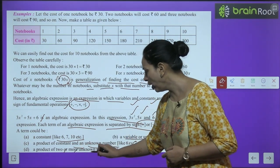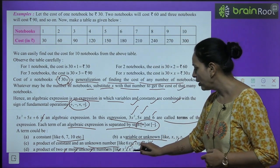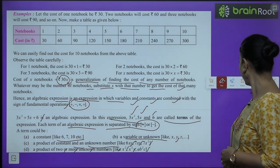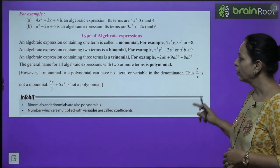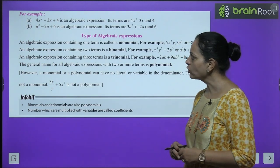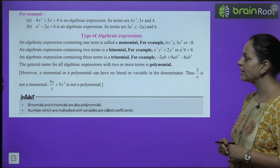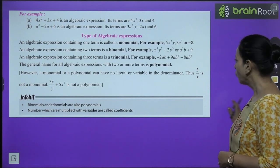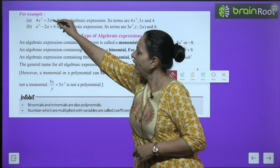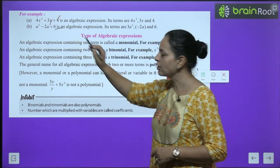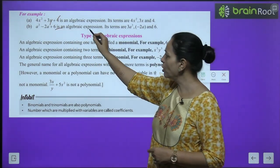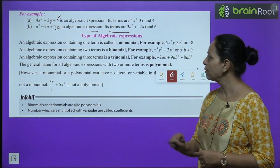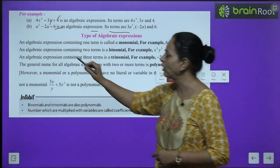For example, 4x² + 3x + 4 is an algebraic expression with 3 terms: 4x², 3x, and 4. In b part, a² − 2a + 6 is an expression whose terms are a², −2a, and 6. Note: always take the sign with the term, so it is −2a.